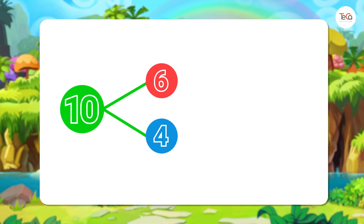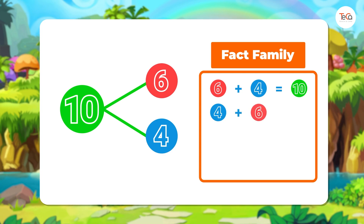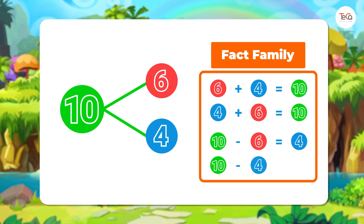Next, for this number bond, we can write the fact family: 6 plus 4 equals 10, 4 plus 6 equals 10, 10 minus 6 equals 4, 10 minus 4 equals 6.